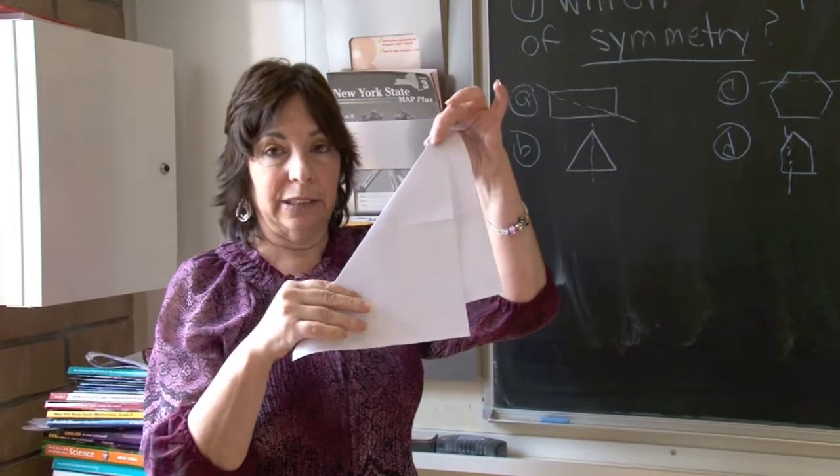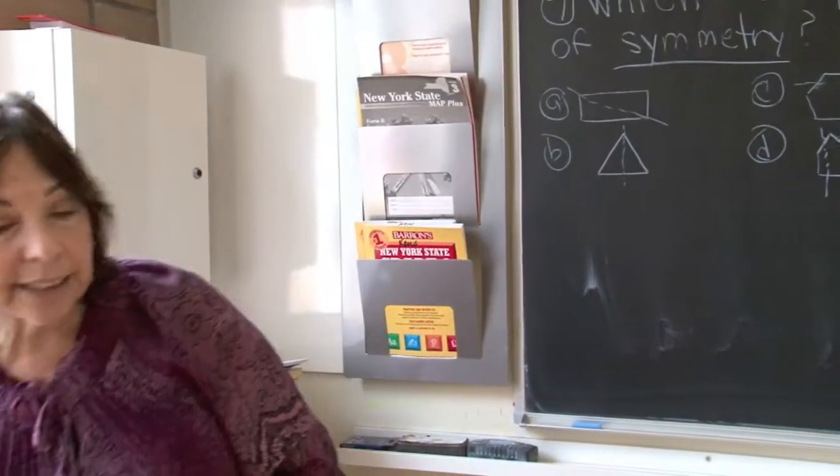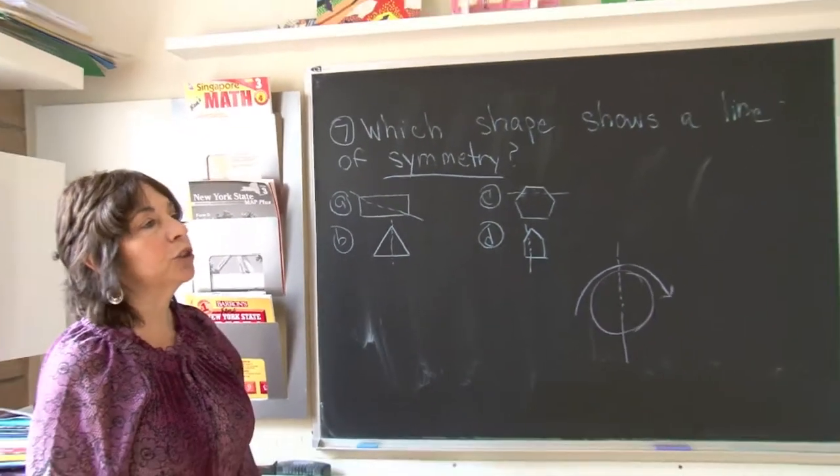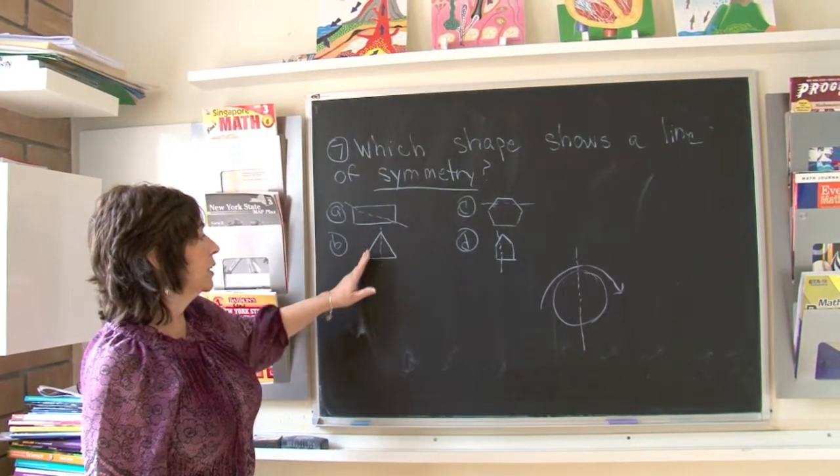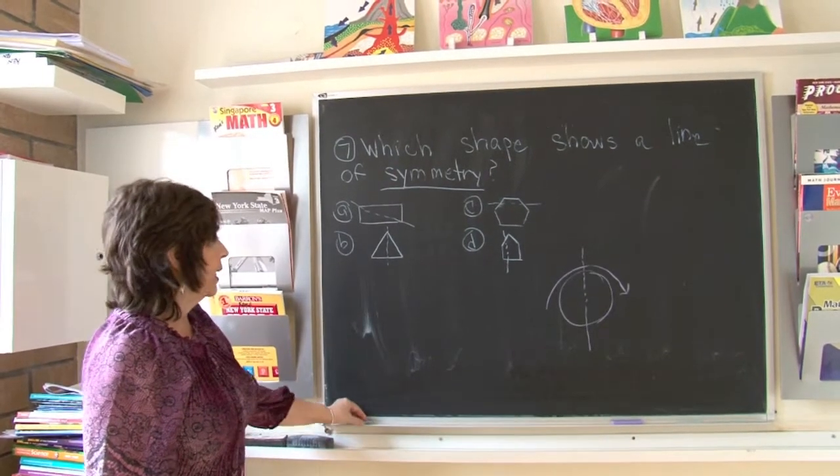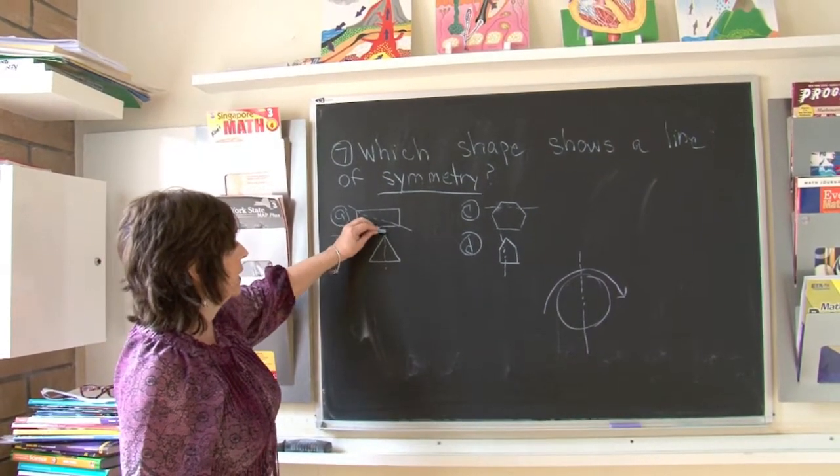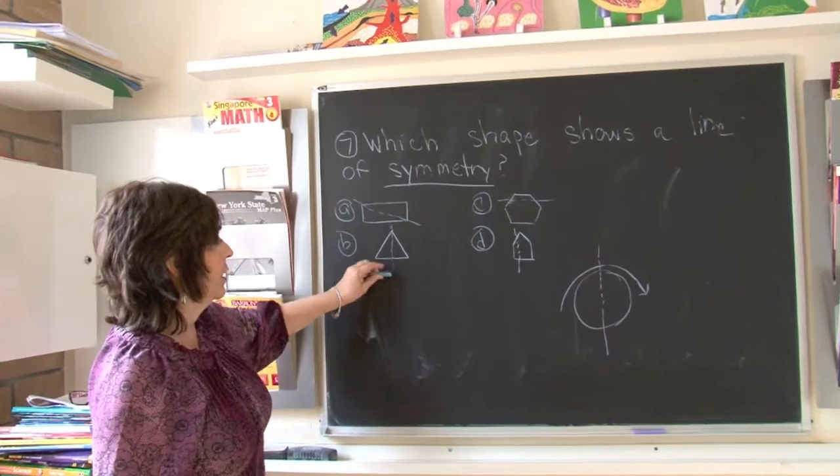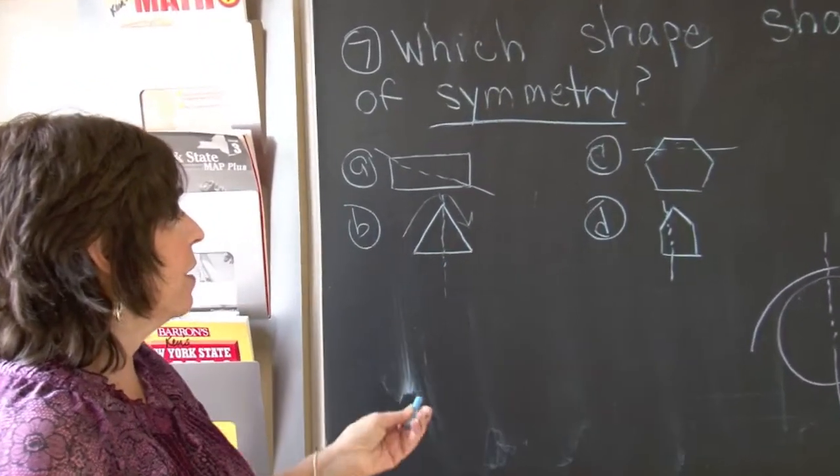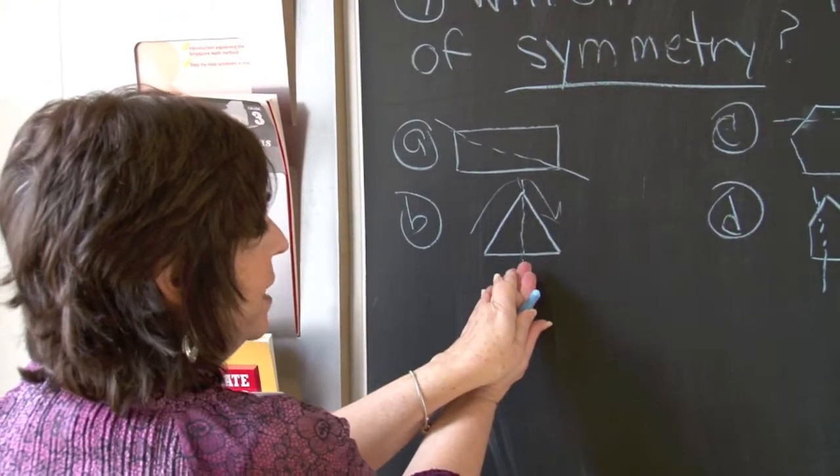Next is a triangle. This is an equilateral triangle. All sides are equal, which is important. The dotted line is directly in half. If I flip this over to this side, it will be the same. It will be the same. That is our answer.